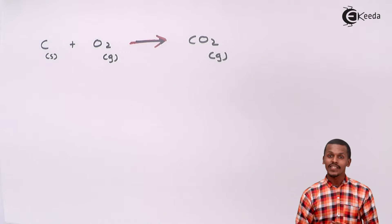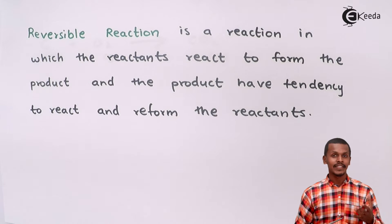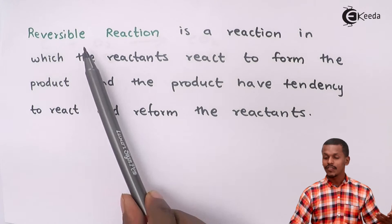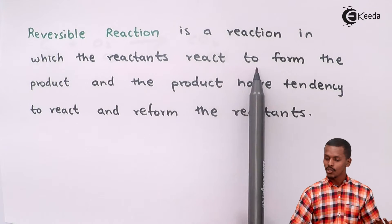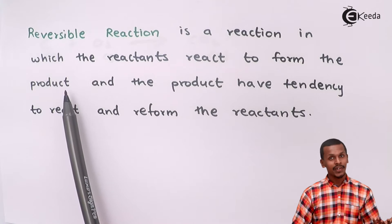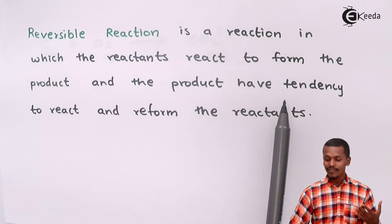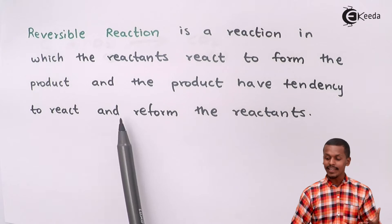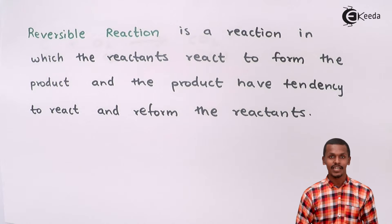Now let us talk about what is actually a reversible reaction. A reversible reaction is a reaction in which the reactants react to form the product, and the product has the tendency to react and reform the reactants. That kind of reaction is basically known as a reversible reaction.